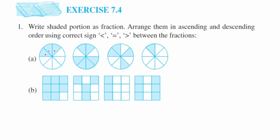The first question shows a circle with different parts. Let us count how many parts there are — there are a total of eight parts of the complete circle. Out of those, three parts are shaded, so the fraction is 3/8. The next shape also has eight equal parts with six shaded, giving 6/8. The third one has four shaded portions, so it is 4/8, and the last one has only one shaded portion giving 1/8.